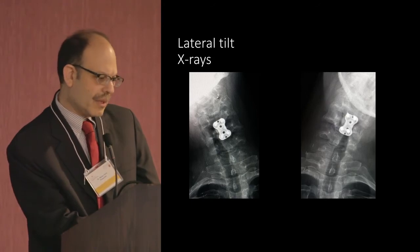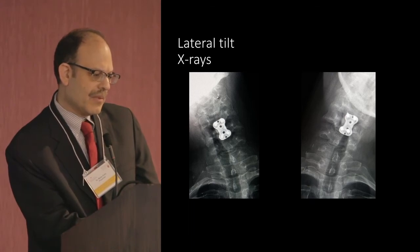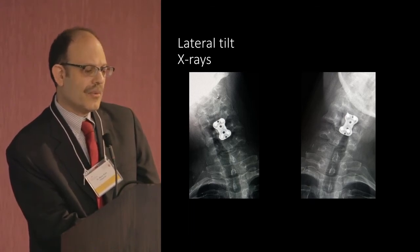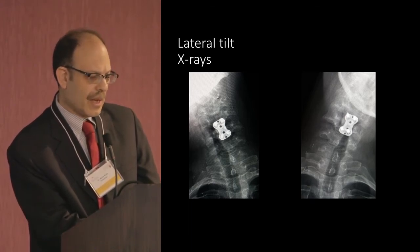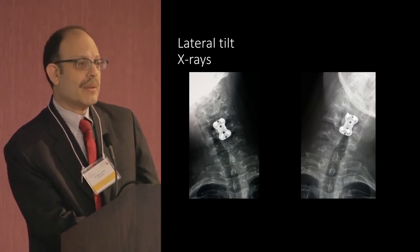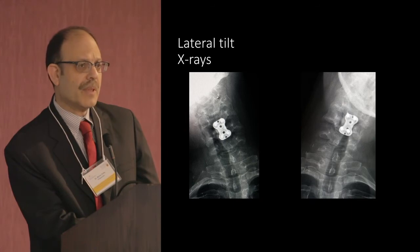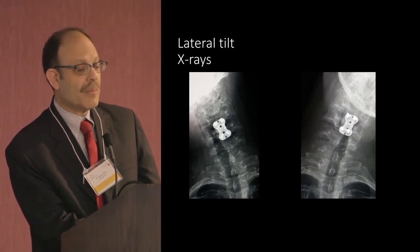We can also do lateral tilting, measuring angles between the vertebral bodies to the right and to the left. There are established criteria for what is a normal amount and what is not. Sometimes there are muscle spasms, or patients have a number of abnormal levels, and tilting can help identify which is the worst.